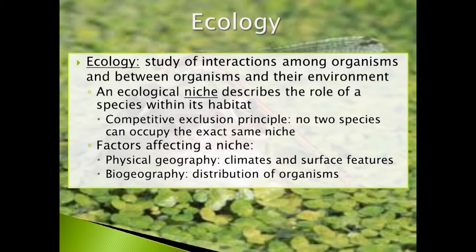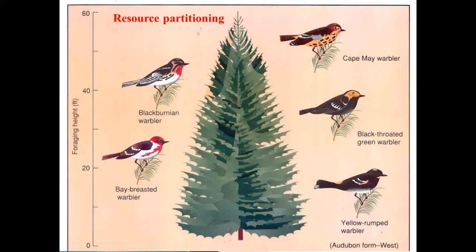Some things that will affect an organism's role in its environment include its location on the globe — where specifically it is located, what kind of climate it is adapting to, and the geography of that particular area. Additionally, the distribution of other species, or biogeography, is going to affect an organism's role. Different species of warblers live in the same environment and even occupy the same species of tree, but they do not have a complete overlap in their ecological niche. Each species occupies a different area of the tree, which helps to limit the amount of competition for similar resources.